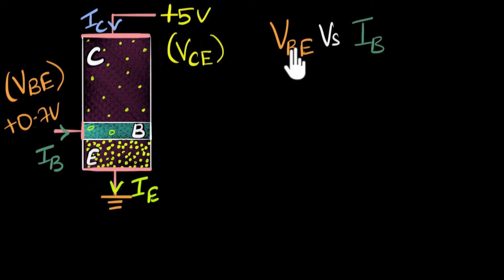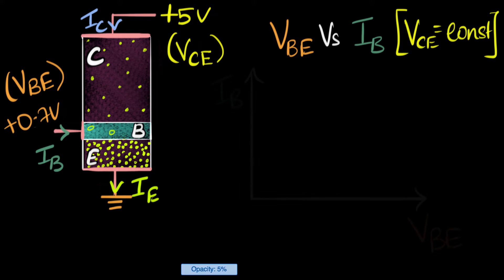We'll see a little bit later how that happens, but we don't want this output voltage to meddle with our experiment. So usually, we keep VCE constant over the entire experiment. All right, so let's quickly go ahead and plot that graph.